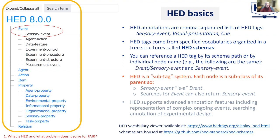HED is a sub-tag system, which means it consists of a group of hierarchically organized terms. In each subtree, the nodes satisfy an is-a relationship — so sensory event is-a event. This is important because it allows for search generalizability. If I search for event, I'm going to get all the data tagged with children of that as well, so I'll get sensory events as well.